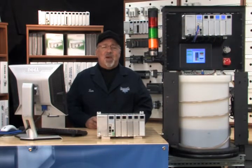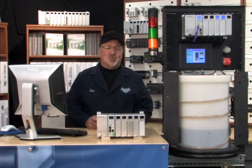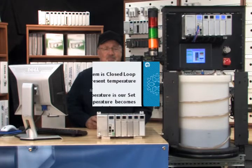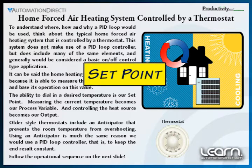Let's start by getting a better understanding of where and how a PID loop control would be used. The simplest way to get a feel for what a PID loop does is to think about the thermostat in your home. Set the thermostat to the desired room temperature — we can call this desired temperature value our set point.